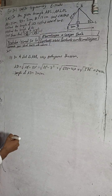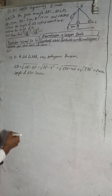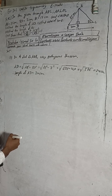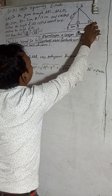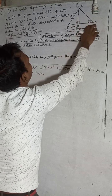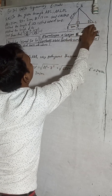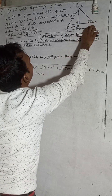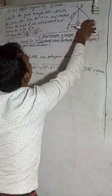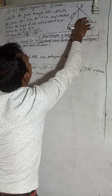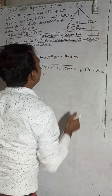Now we find the value of tan theta. Tan theta equals perpendicular divided by base — that is P by B. In triangle ADC, with reference angle theta, AD is the perpendicular. We also need to find DC to get the base.